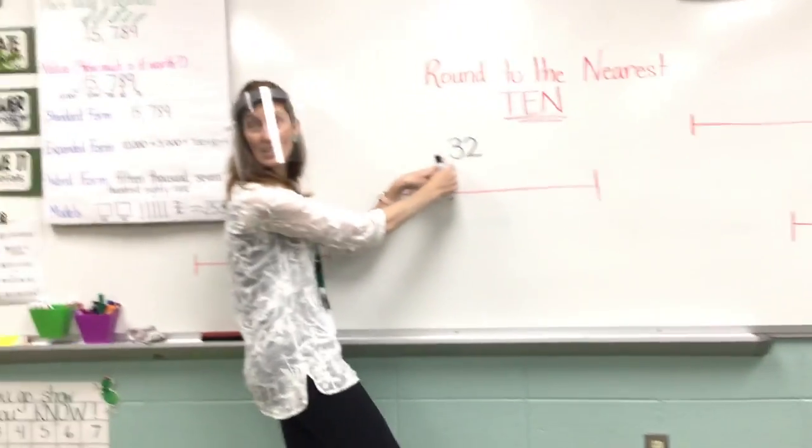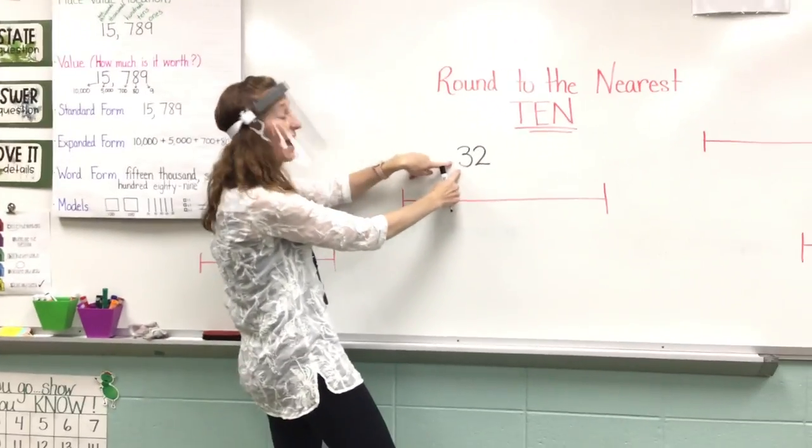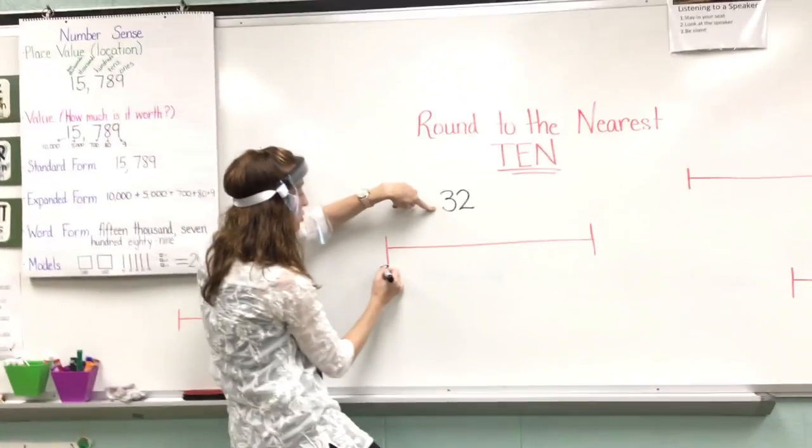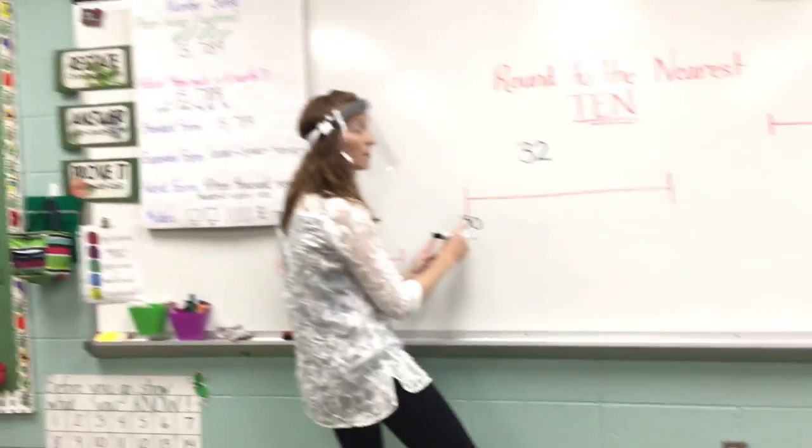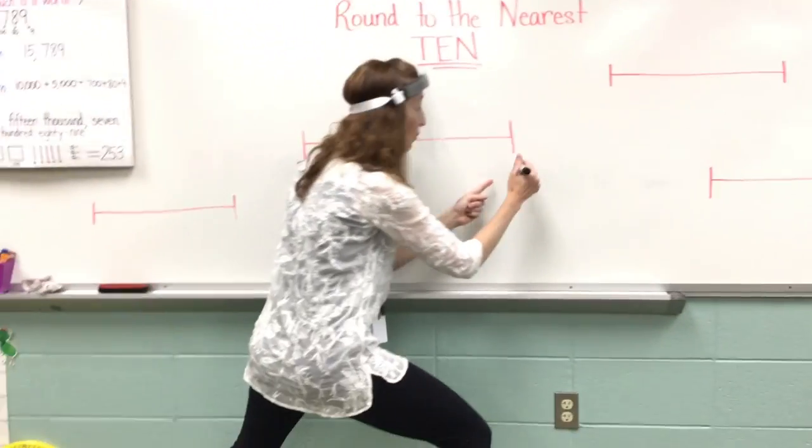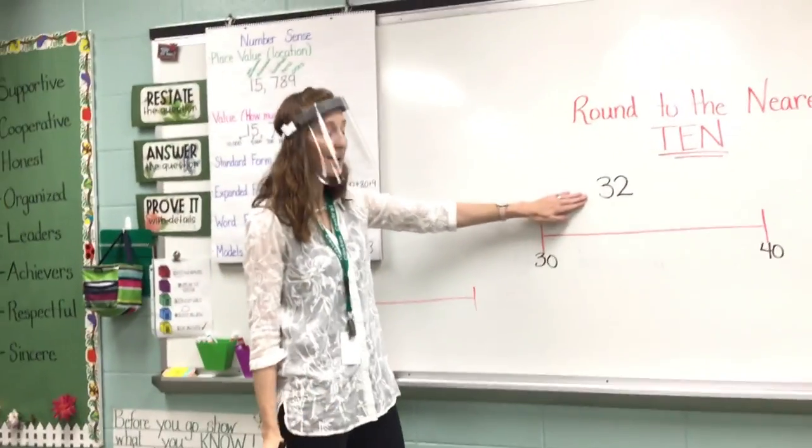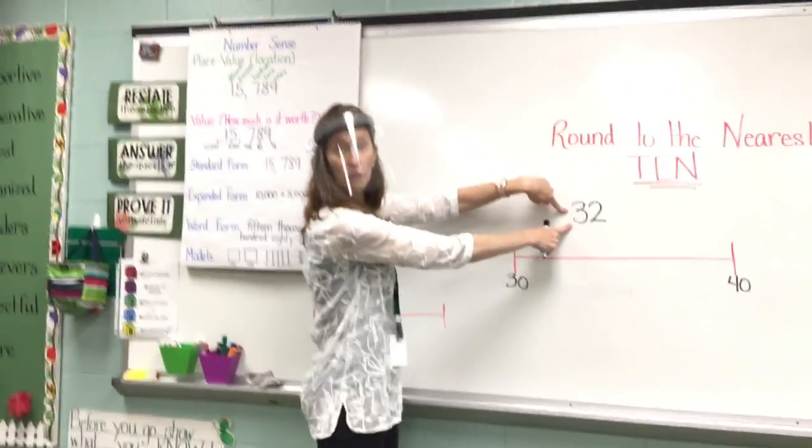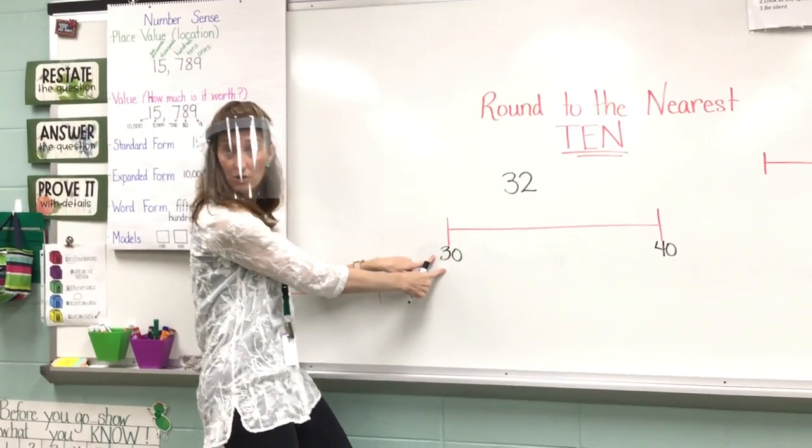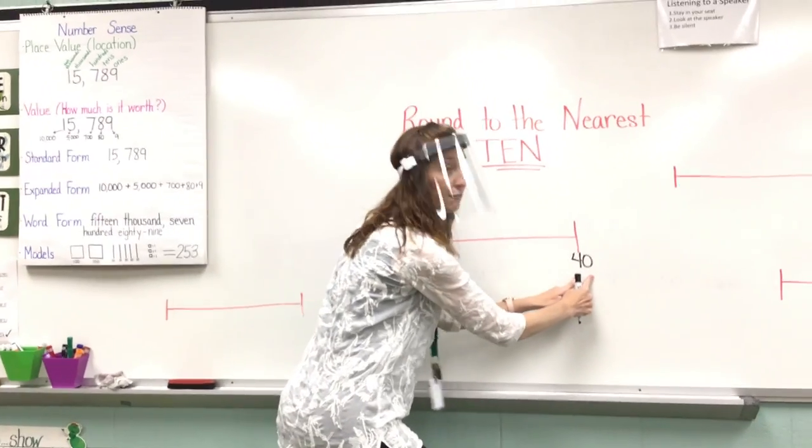So here's how I figure it out. I look at the tens place. That's where I start. Everybody say 30. That 3 is really worth 30. It gets to go first. If I add 10 more, 30 plus 10 more is 40. That's where this comes right here. So that's how I find out the numbers on my number line. I look in the tens place. That 3 is worth 30, it goes first. Then I add 10 more. 30 plus 10 is 40.